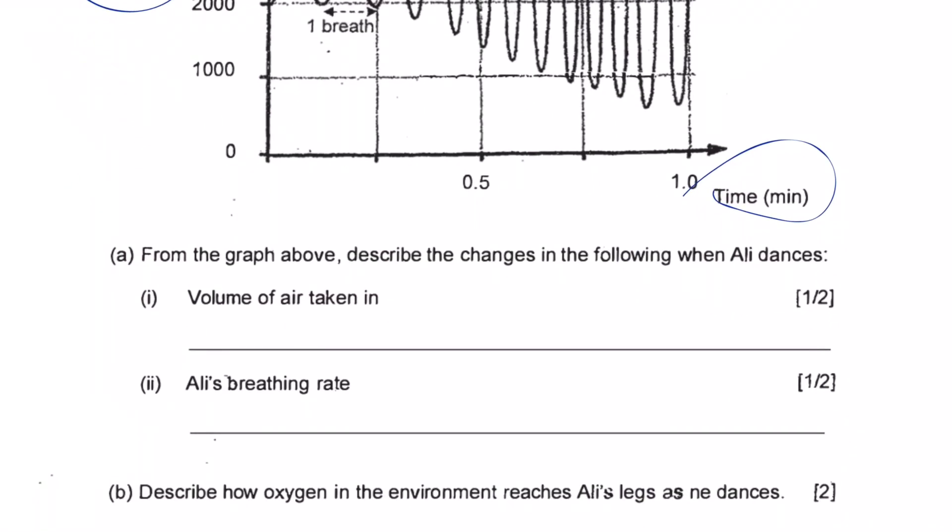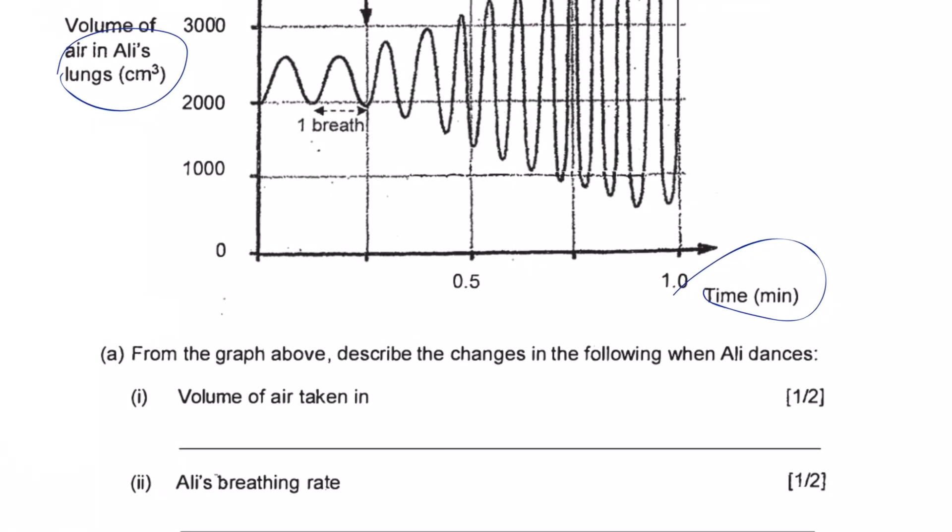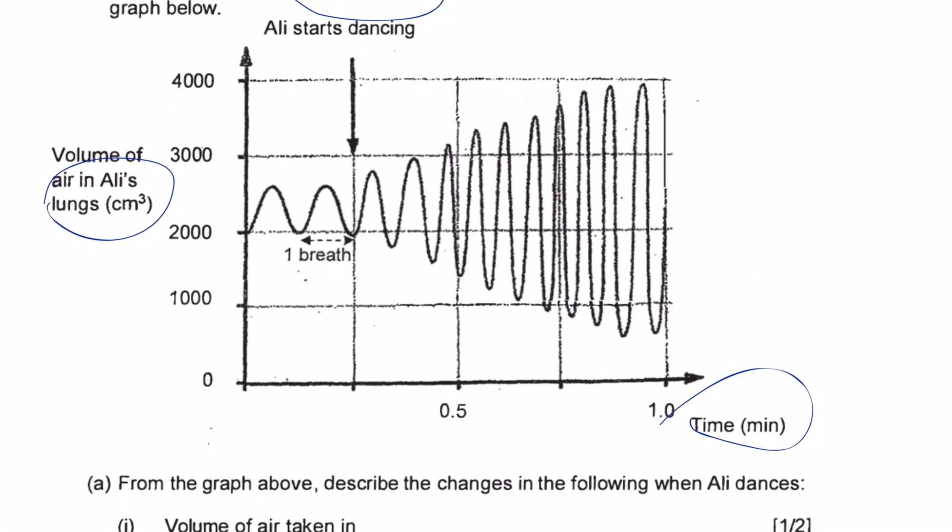At first it's regular, that's like he he he he he when we walk. Yeah, so dancing is like exercise, right? Rigorous exercise. Wonder what dance he's doing. So describe how oxygen in the environment reaches Ali's legs as he dances. How does the oxygen reach his legs while he's dancing? What is the system that brings the oxygen to the legs? Yeah, circulatory system, okay. The blood, the blood, the blood vessel will pump the blood and then it flows to the legs. Yeah, correct. Can you see that?